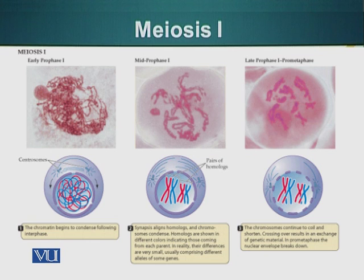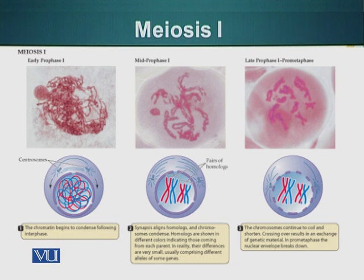The centrosomes continue their migration towards the opposite ends of the cell. An important feature here is that homologues are pairing — the two chromosome 1s will pair up with each other. Each chromosome has already been divided, so each individual chromosome consists of two chromatids. When homologues pair up, we have four chromatids lying next to each other, as you can see on the slide.